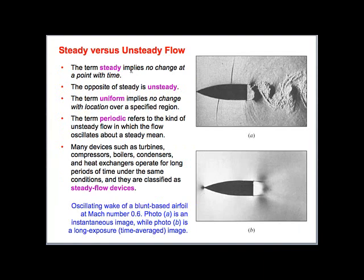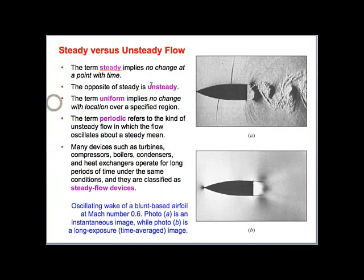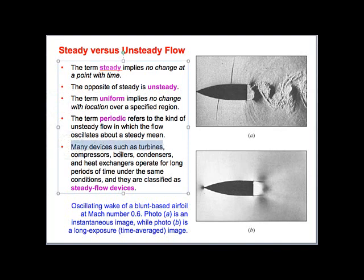Another term we'll be using is steady or unsteady, particularly when talking about the conservation of momentum, which we've already introduced when discussing conservation of mass. Steady means that it doesn't change with time, whereas unsteady is just the opposite. Since turbines, compressors, boilers, condensers, heat exchangers, and many other real-world applications are steady-flow devices, we will also focus on steady-flow analysis for the majority of our problem-solving sessions.